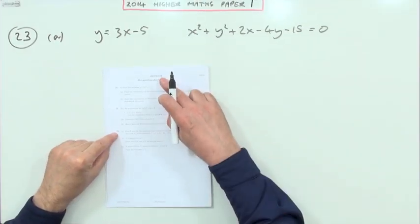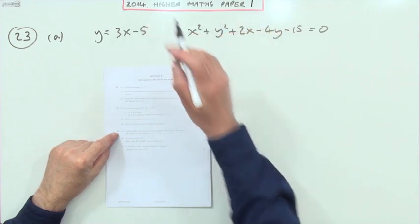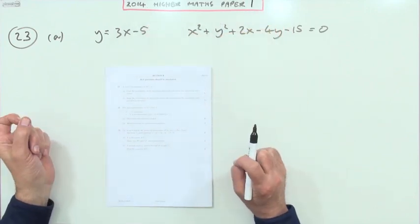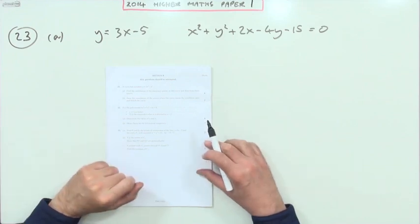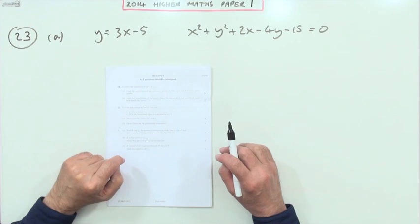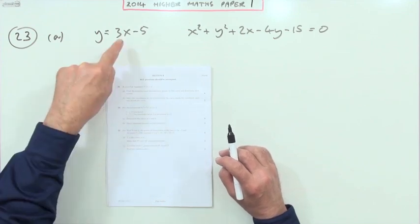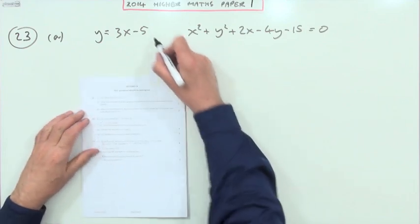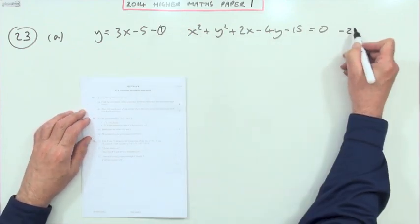Number 23 from section B of Paper 1 of the 2014 Higher Maths Circles question. First part for four marks: find the intersection of this line and that circle. So here's the line, just call that one, there's the circle.